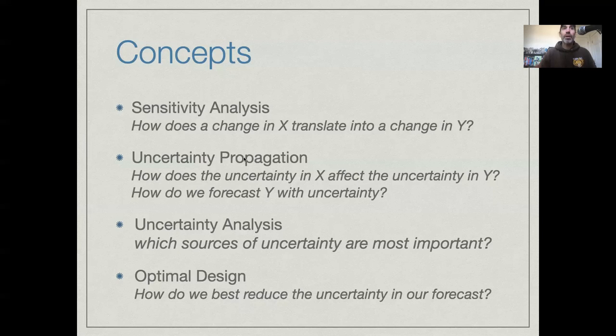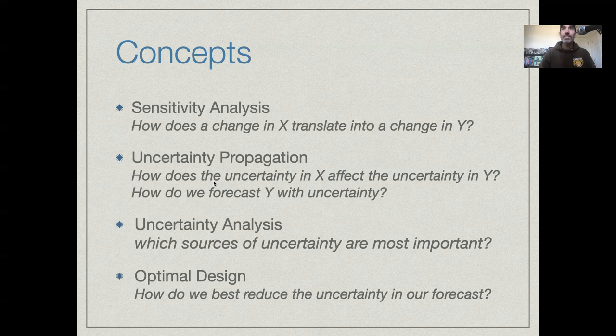This is closely related, but slightly different from the idea of uncertainty propagation. So how does uncertainty in x affect uncertainty in y? So not just how change in x affects change in y, how does the uncertainty in our inputs affect the uncertainty in our outputs? Which is very related to the question of how do we forecast our outputs with uncertainty?